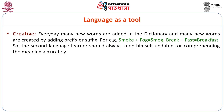Other than these two, language can be creative and language can have redundancy. Language is creative because every day many new words are added in the dictionary, and many new words are created by adding prefixes or suffixes. For example, smoke and fog give us smog — S-M-O-G — smoke plus fog. That's a new word. Similarly, break and fast are different words, but when we put together 'breakfast,' we get a different meaning. So the second language learner should always keep himself updated for comprehending the meaning accurately.